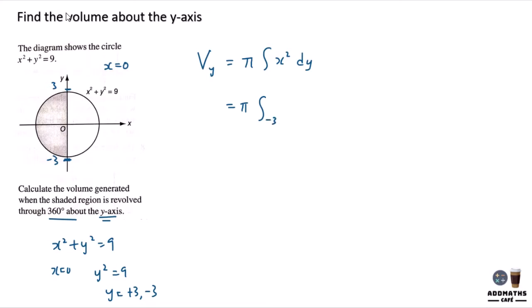So it will be from negative 3 to 3, x squared dy. And you know that x squared is 9 minus y squared. So just apply into this equation, the formula, and you will get 9 minus y squared dy.